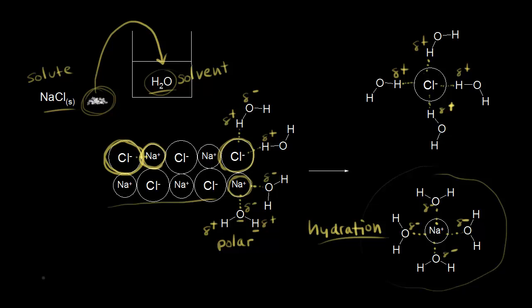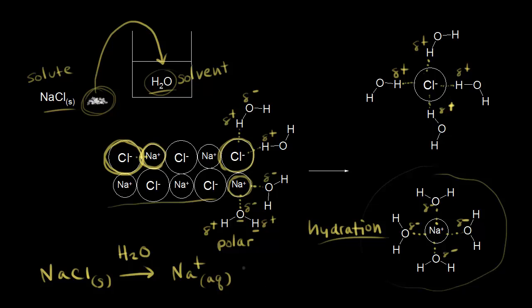The way that you write this, you start with solid sodium chloride put into water as our solvent. After the water molecules surround our ions, we have sodium ions in aqueous solution — written as Na+ (aq) — and chloride anions also in aqueous solution — written as Cl- (aq). So we have an aqueous solution of sodium chloride.